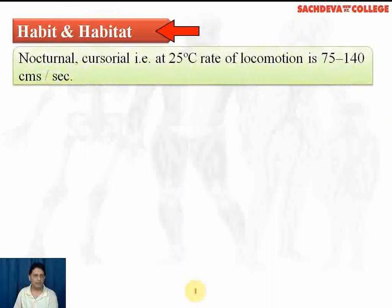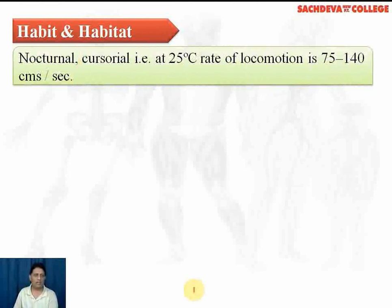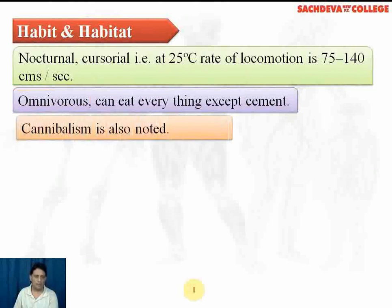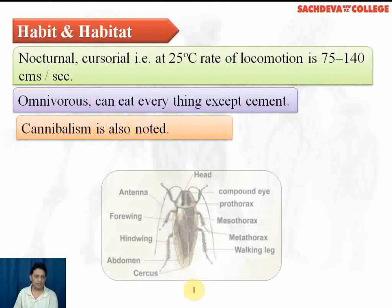Habit and habitat of cockroach: the cockroach is nocturnal — it comes out mainly during the night. It is cursorial, meaning it can run at a fast rate. It is omnivorous and can eat any organic matter. Cannibalism is also noted; at a time of crisis, cockroaches can kill and eat each other.